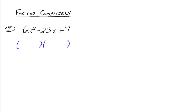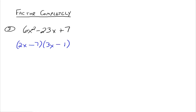So 6x and x didn't work. Now let's try 2x and 3x with 1 and 7. We get 2x times 7 is 14x, and 1 times 3x is 3x — 14 and 3 won't give us 23. What about 7 and 1? 2x times 1 is 2x, and 7 times 3x is 21x — and 21 plus 2 gives us 23. Since the last sign is a plus, the signs of both binomials are the same as the middle term sign — both minuses.